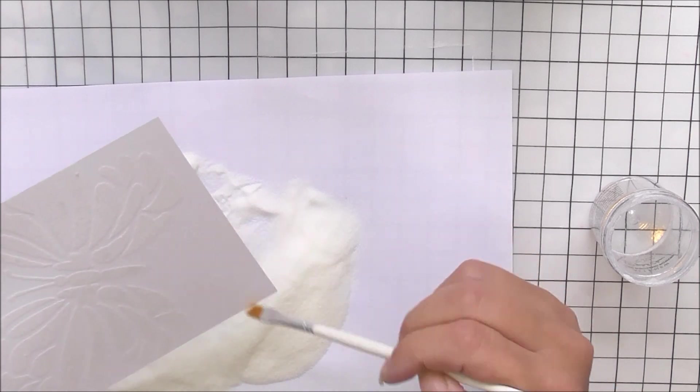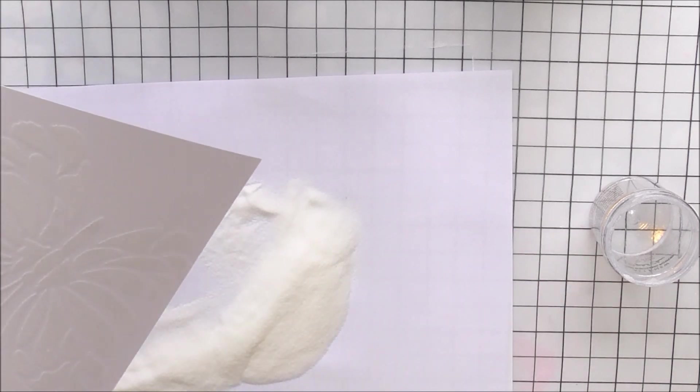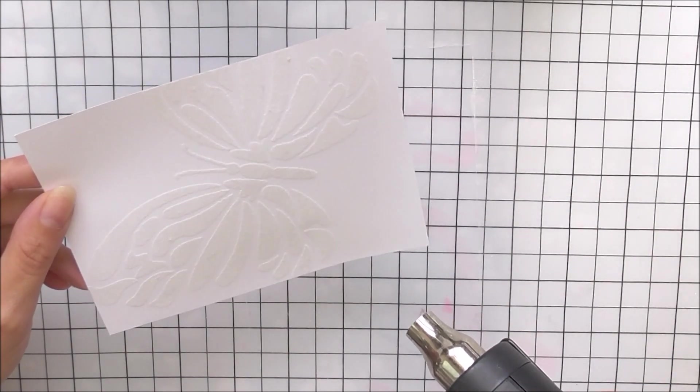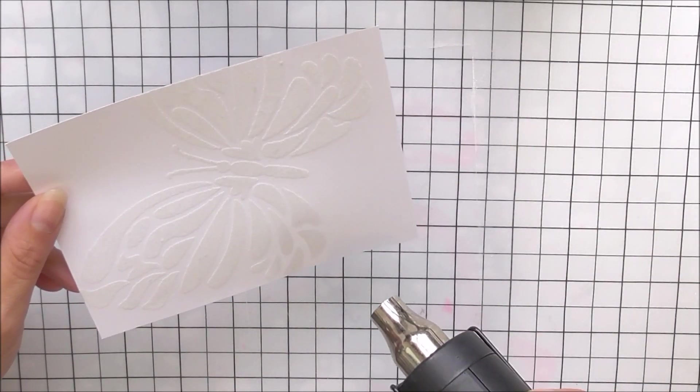I had a couple of stray strands of powder from where the tape was, so I'm just going to take a dry paintbrush and remove those before I heat set.